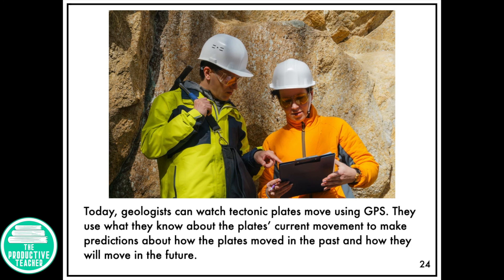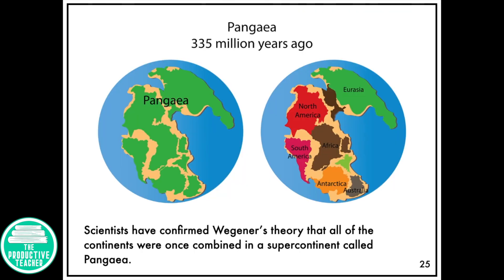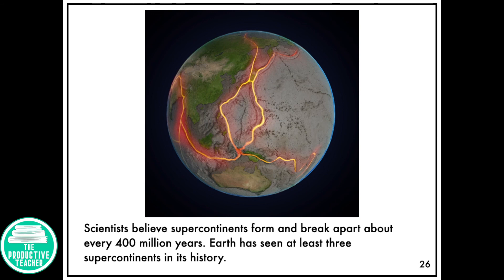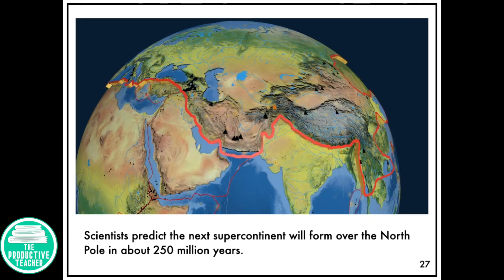Today, geologists can watch tectonic plates move using GPS. They use what they know about the plates' current movement to make predictions about how the plates moved in the past and how they will move in the future. Scientists have confirmed that all of the continents were once combined in a supercontinent called Pangaea. Scientists believe supercontinents form and break apart about every 400 million years, and Earth has seen at least 3 supercontinents in its history. Scientists predict the next supercontinent will form over the North Pole in about 250 million years.